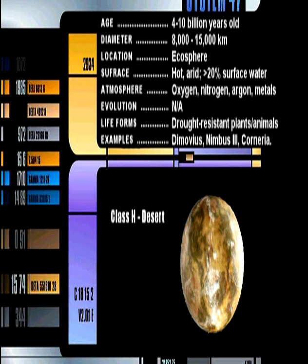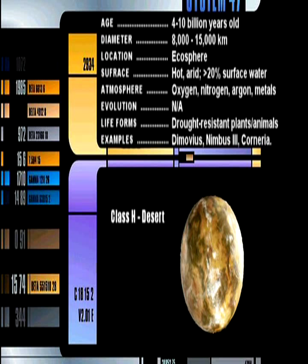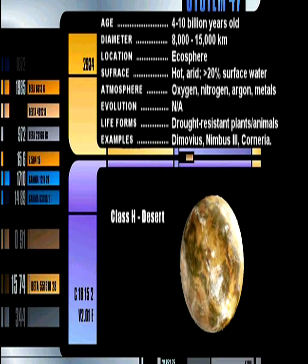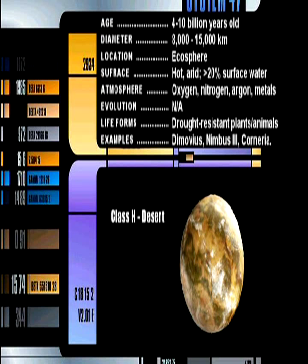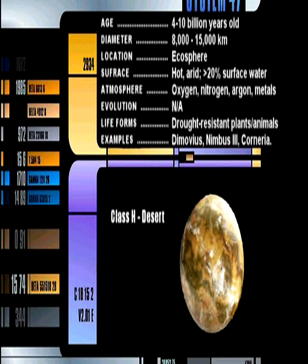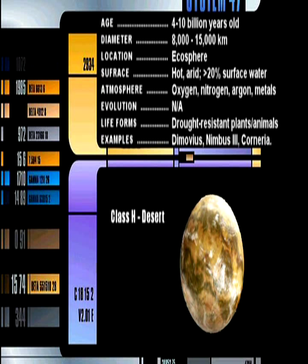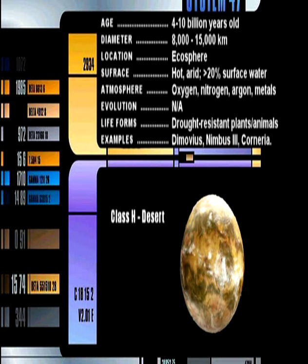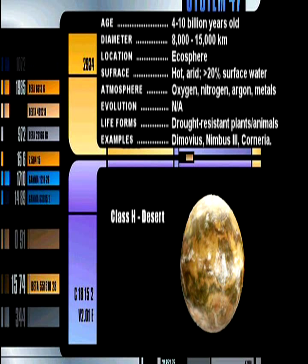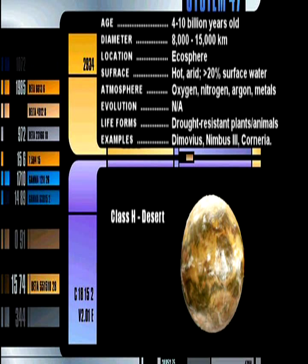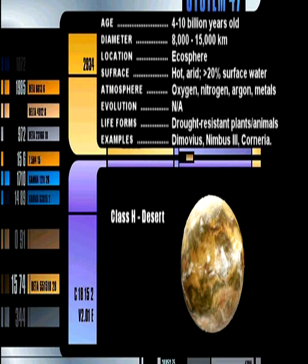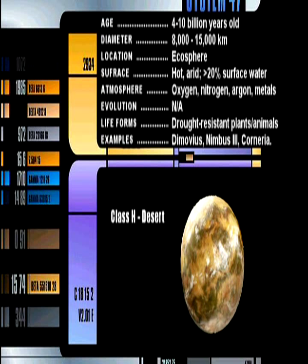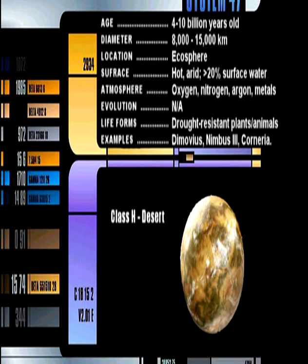Class H Desert. A planet is considered Class H if less than 20% of its surface is water. Though many Class H worlds are covered in sand, it is not required to be considered a desert. It must, however, receive little in the way of precipitation. Drought-resistant plants and animals are common on Class H worlds and many are inhabited by humanoid populations. Most Class H worlds are hot and arid, but conditions can vary greatly.